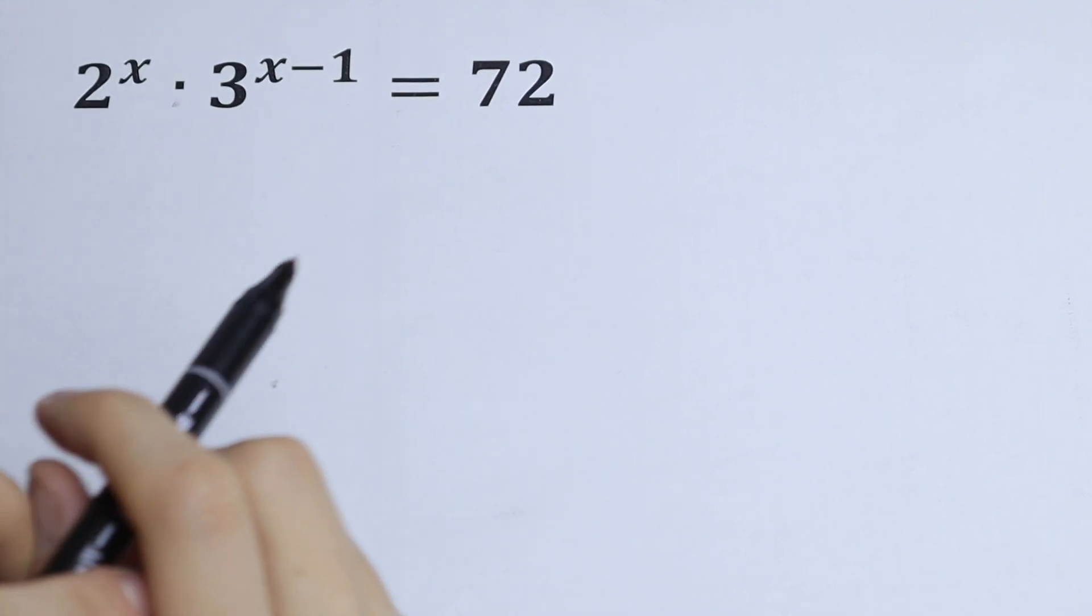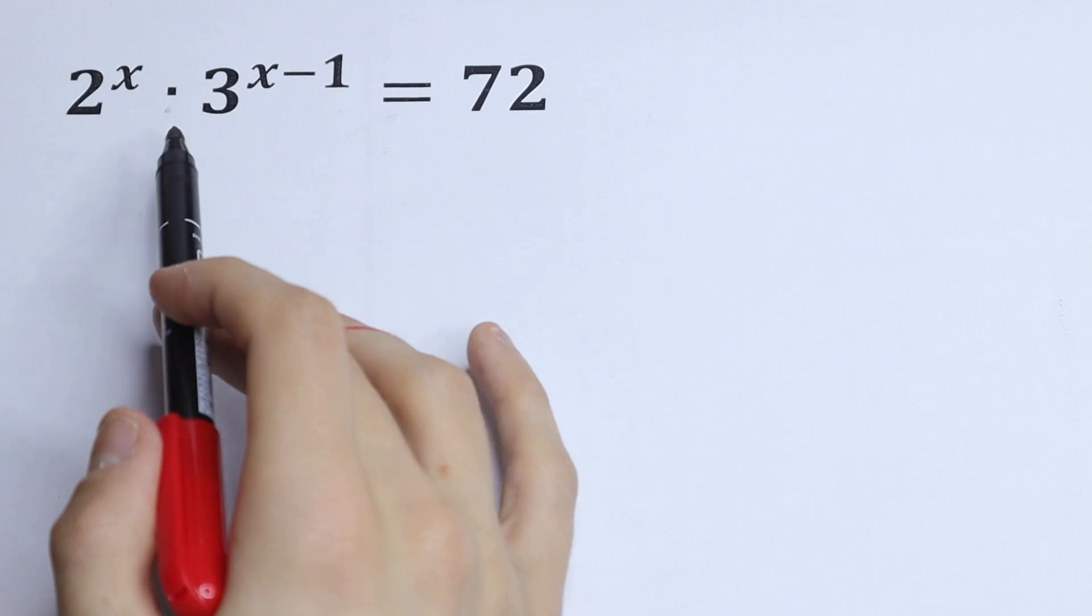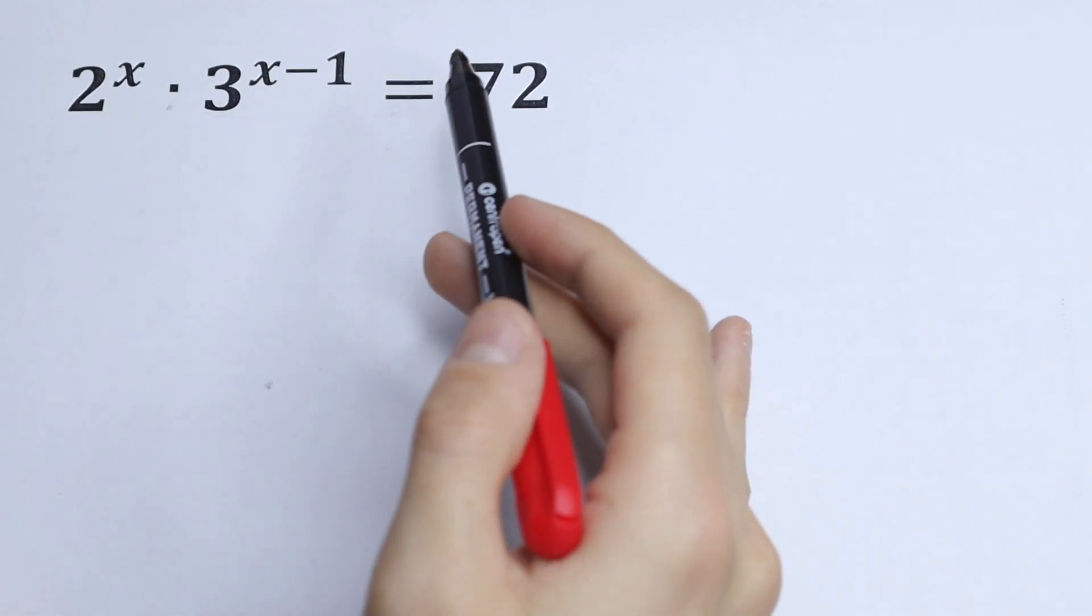Hello everyone, welcome back to MathMood. Here we have an interesting equation: 2 to the power x times 3 to the power x minus 1 equal to 72.